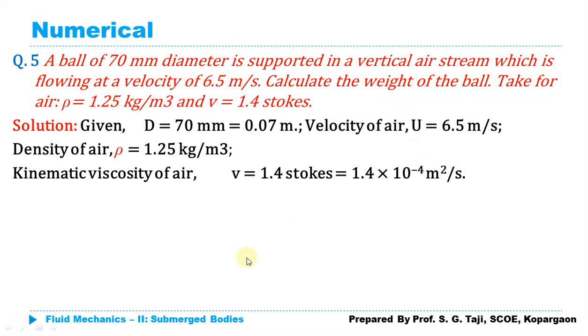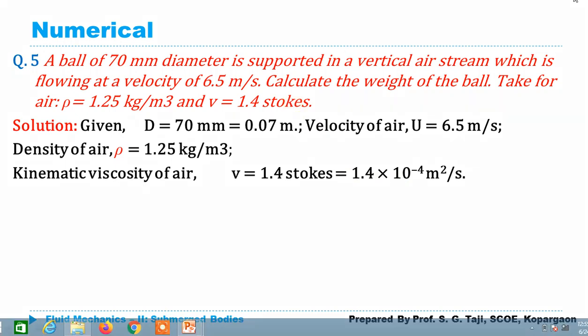The kinematic viscosity of air is given in stokes, so we convert it to m²/s by dividing by 10⁴. It becomes 1.4 × 10⁻⁴ m²/s.